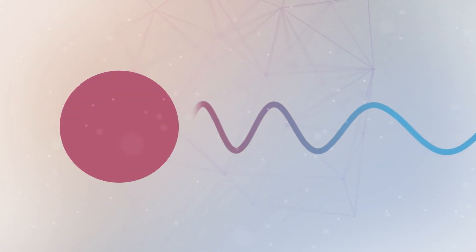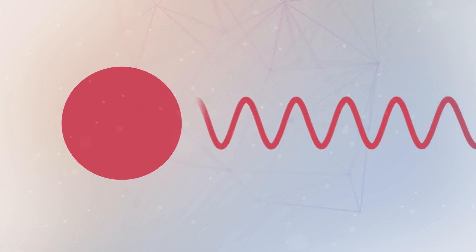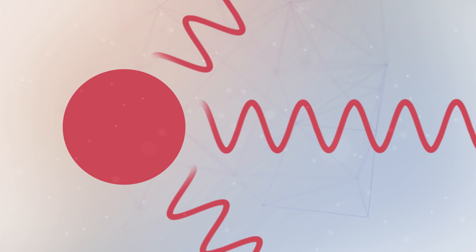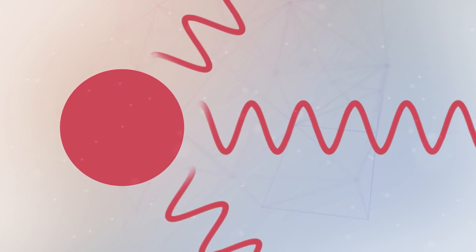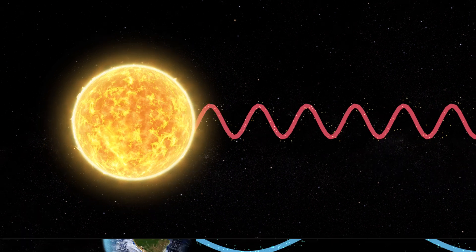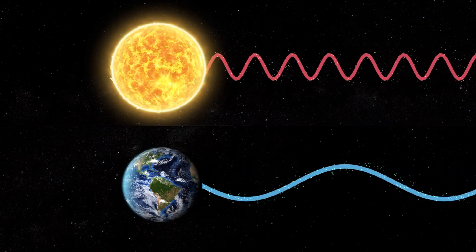Objects with hotter temperatures give off radiation in shorter wavelengths and emit more energy. Every single object with a temperature emits radiation. Our Sun primarily gives off shortwave radiation, while the Earth primarily gives off longwave radiation. Radiation from our Sun reaches the Earth's surface, providing the planet with the heat and energy necessary to sustain life.